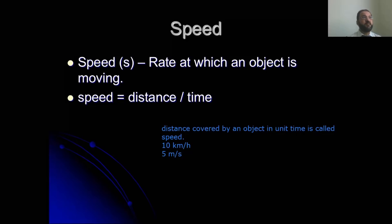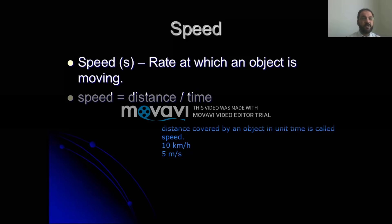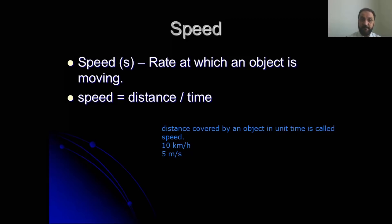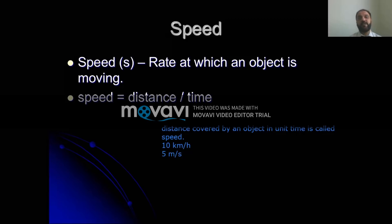For example, you are coming from one place to school. I ask you what was your speed. Of course you cannot tell your exact speed because on the way you maybe stopped, slowed down at a red signal. Your speed was not the same throughout. So of course you will tell me the average speed, not the accurate speed. To find average speed, you calculate the total distance and then divide it by the total time.